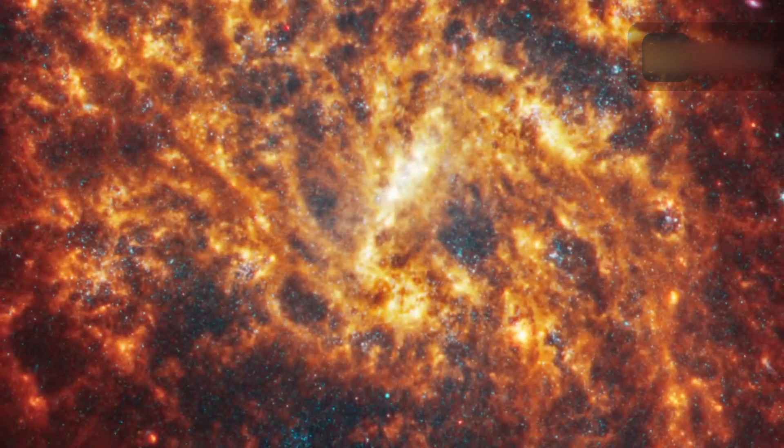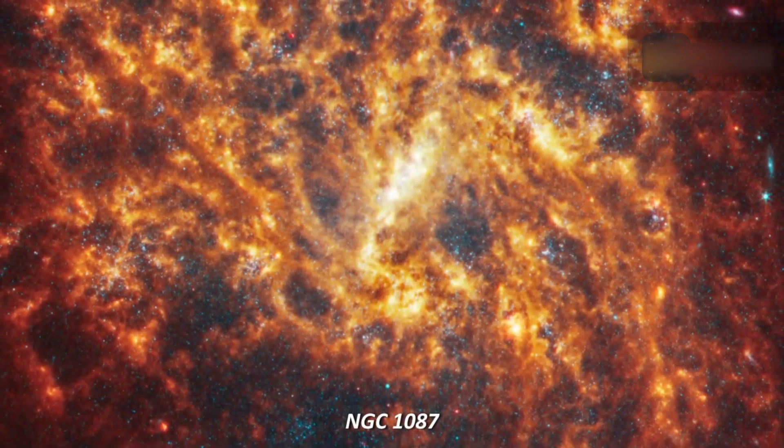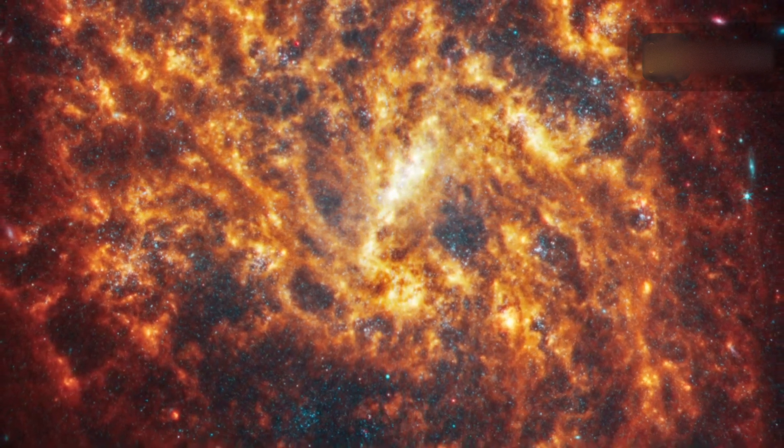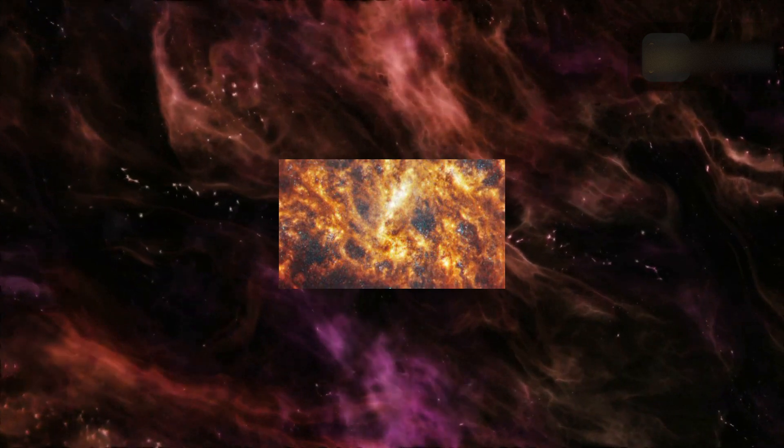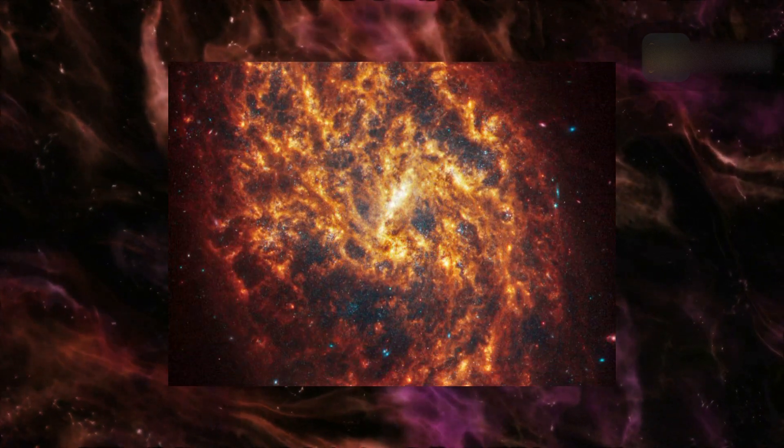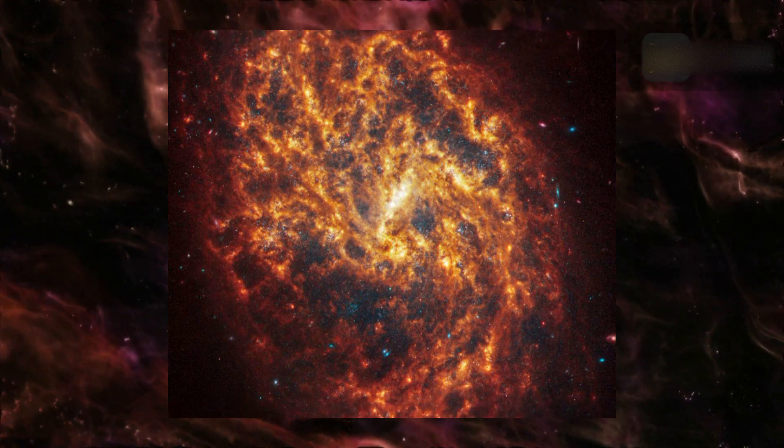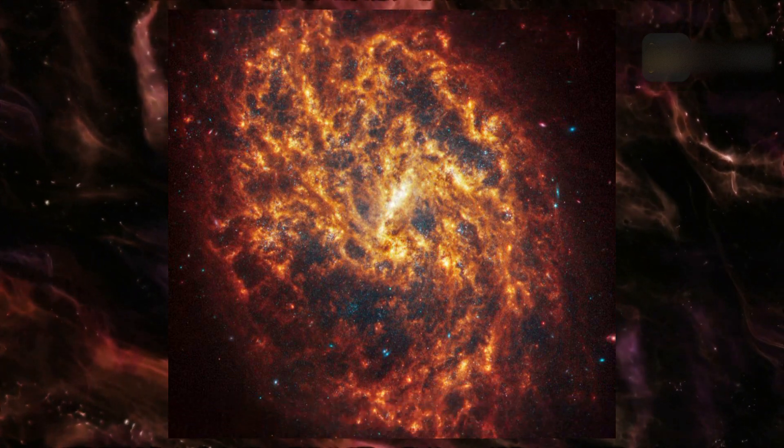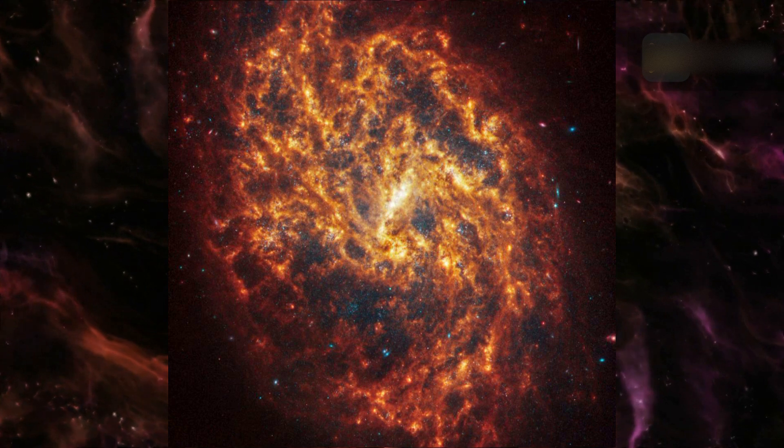Spiral galaxy NGC 1087 is 80 million light-years away in the constellation Cetus. Spiny spiral arms made of stars, gas, and dust also start at the center, largely starting in the wider area of the blue haze. The spiral arms extend to the edges, rotating counterclockwise.